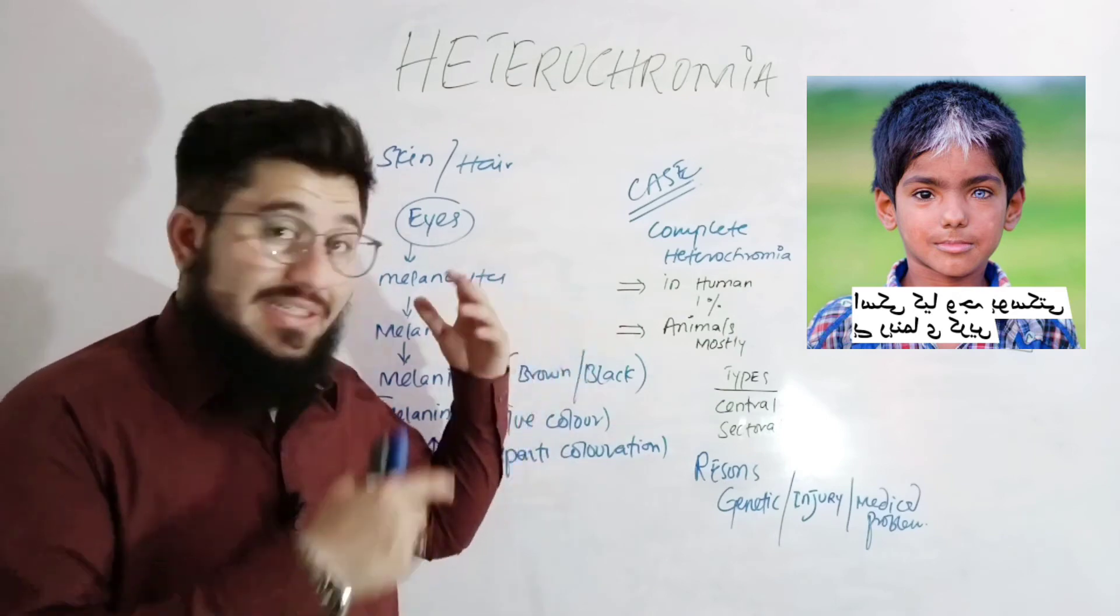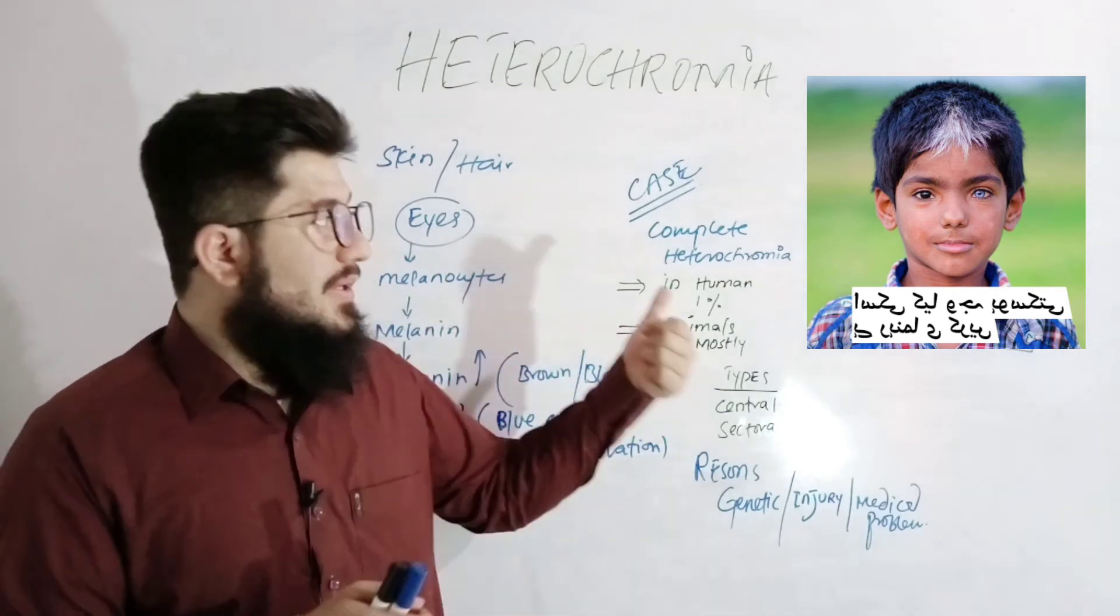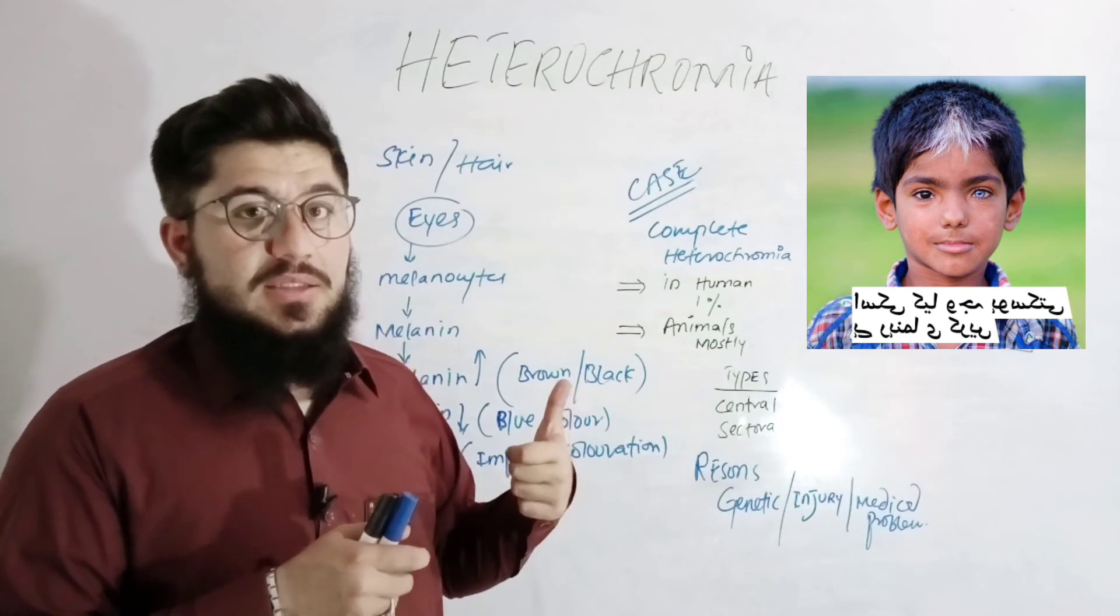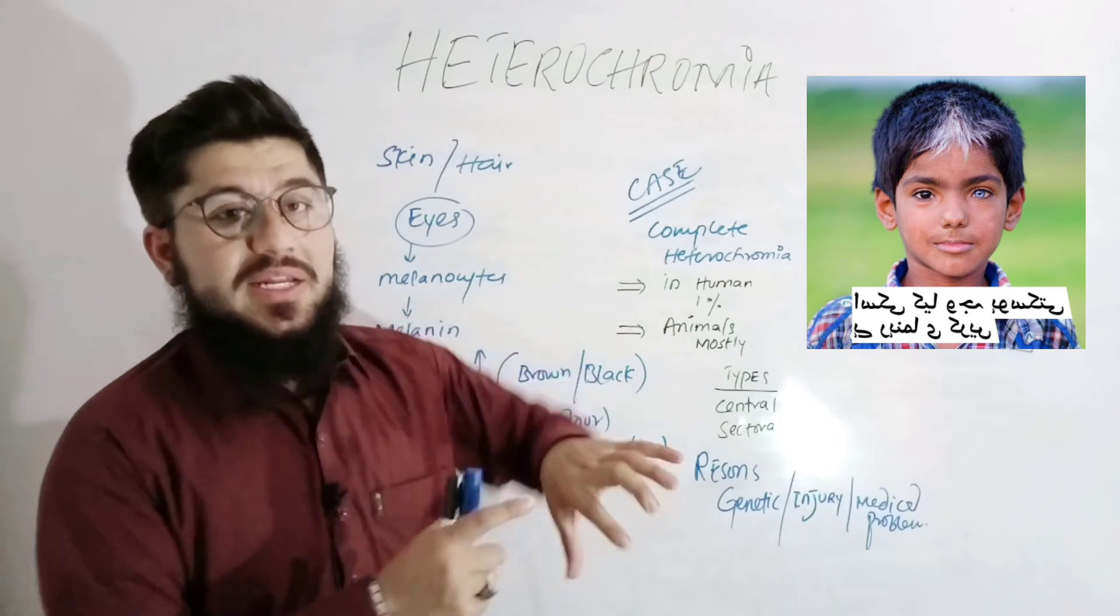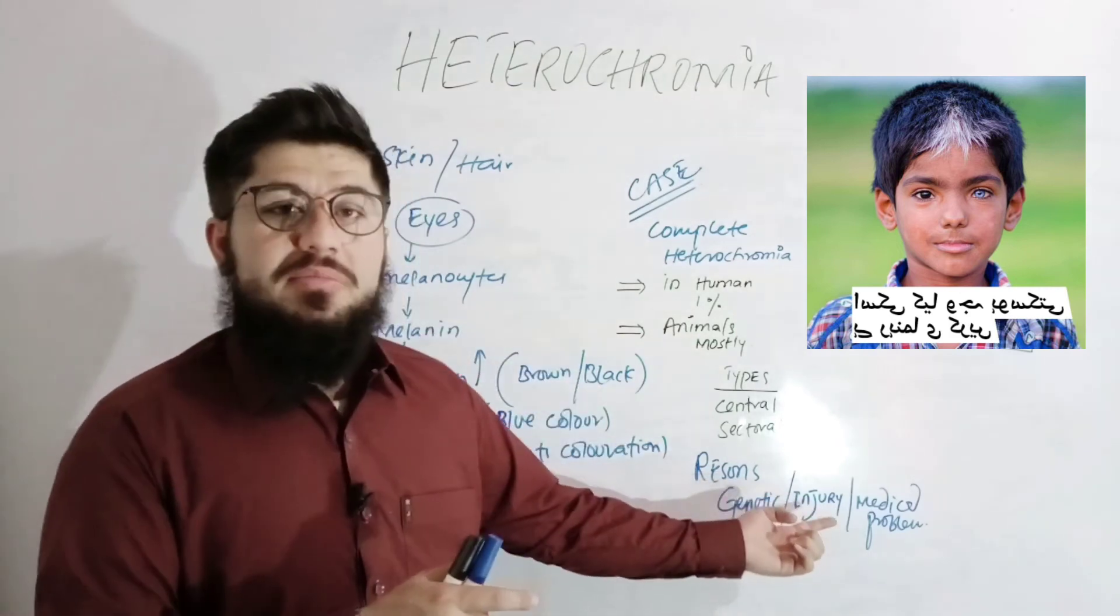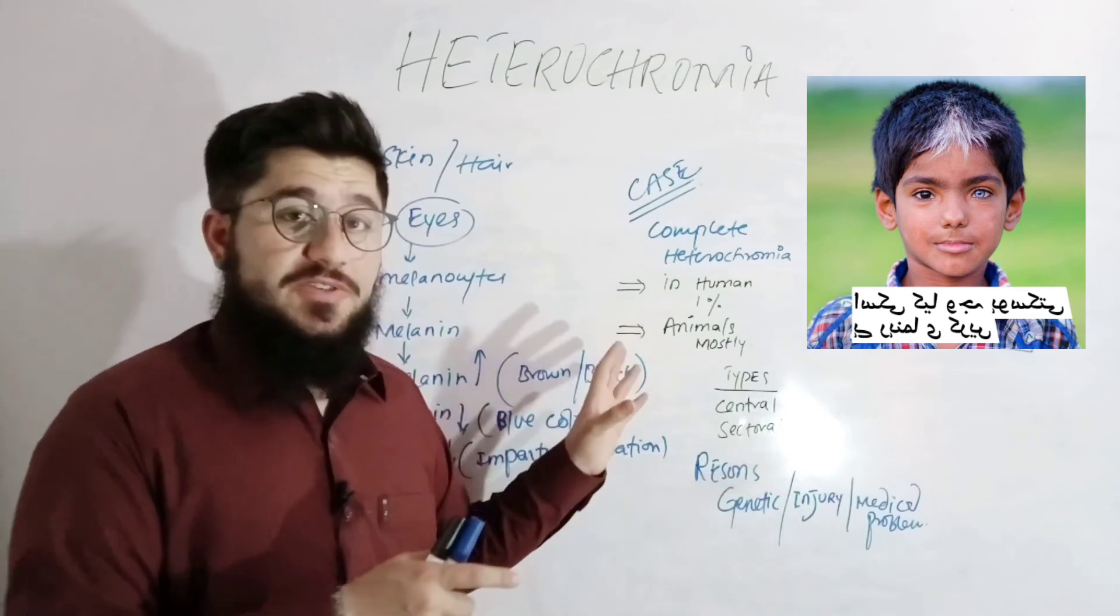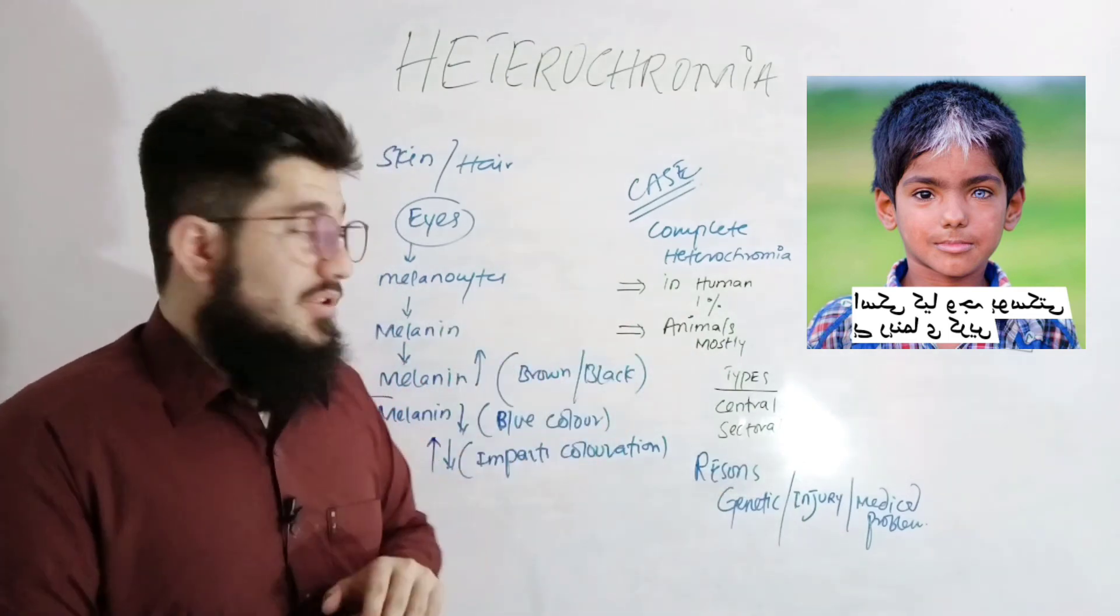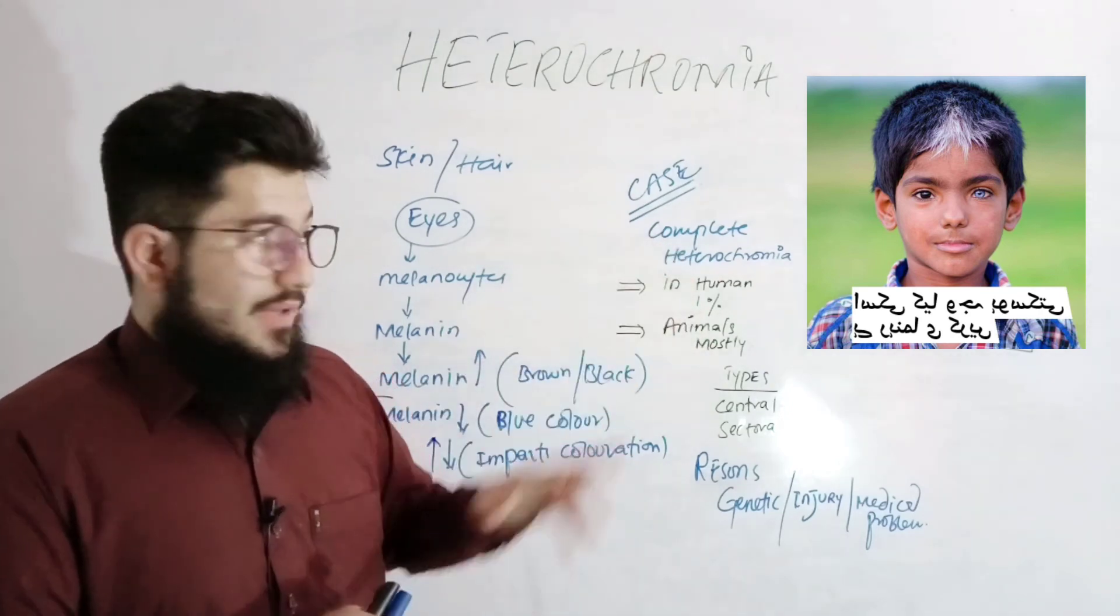Now, what is the reason behind or the reasons behind? Very simple. The very first is genetic. And sometimes different coloration is observed because of injury or some medical problem. So injury can be the cause of this and some other medical problems can be the cause of such kind of coloration or different coloration. And genetic is considered as the most common in these animals and humans like this.